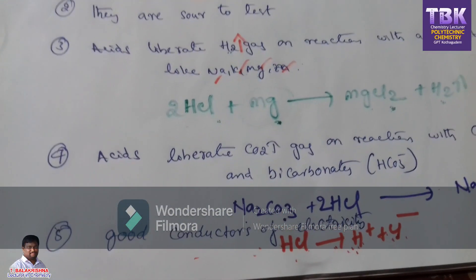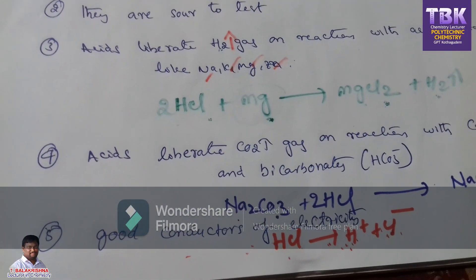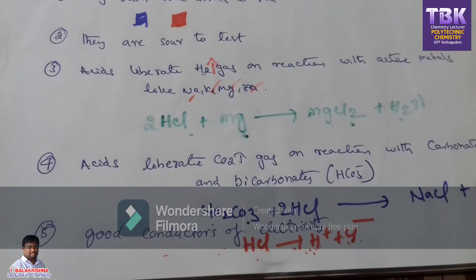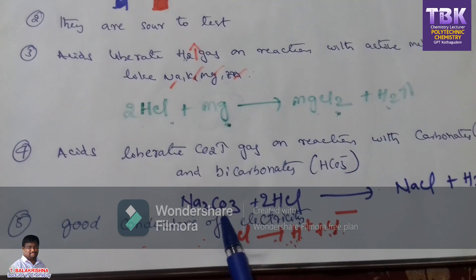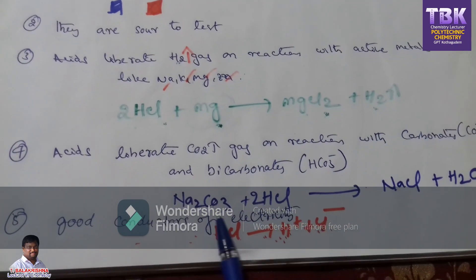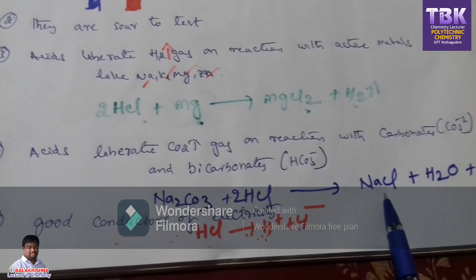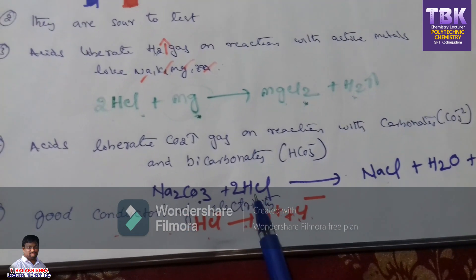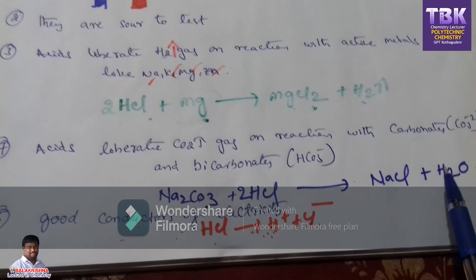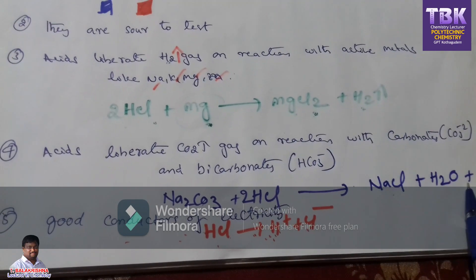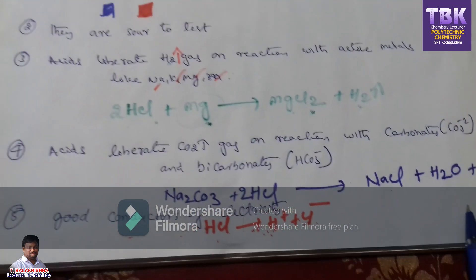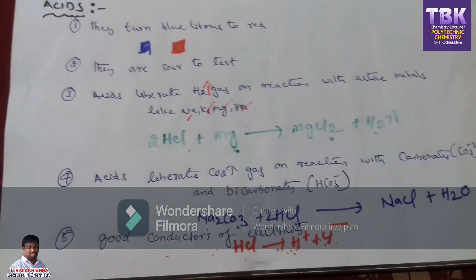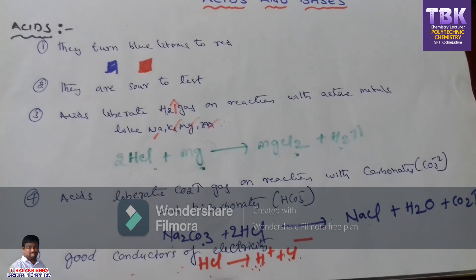Next point: acids react with bases to form salt and water. That reaction is called a neutralization reaction. When a strong acid reacts with a base, it produces salt plus water. Such a reaction is called a neutralization reaction. All acids are ready to participate in a neutralization reaction with a base. These are the properties of acids.